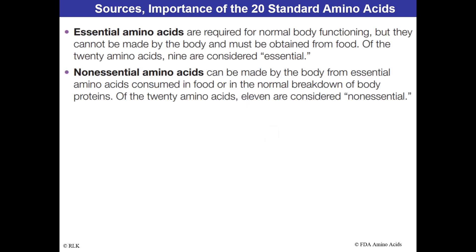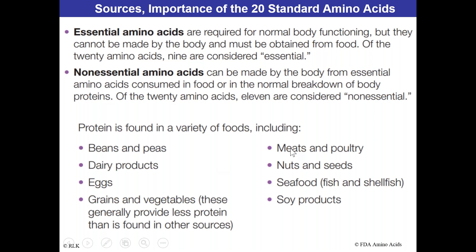Here are some important sources of the 20 standard amino acids. You get these from food. Our bodies can metabolize all the amino acids if we eat them, but we can't make all of them — we definitely can't make all the essential ones. They come from a variety of sources: grains, vegetables, beans, peas with high polysaccharide content, dairy products, eggs, meats, poultry, nuts, seeds, seafood, and soy products.